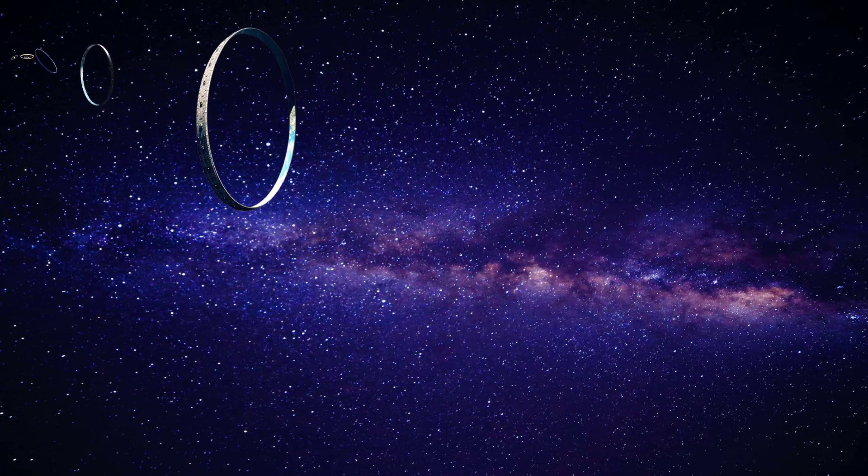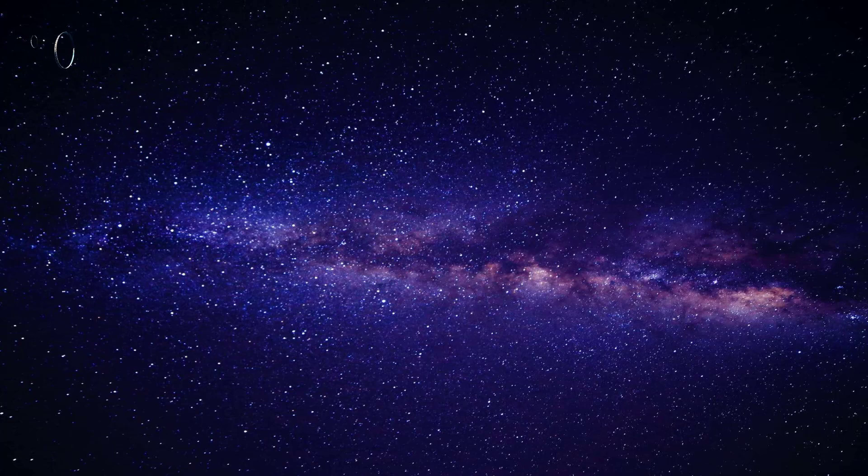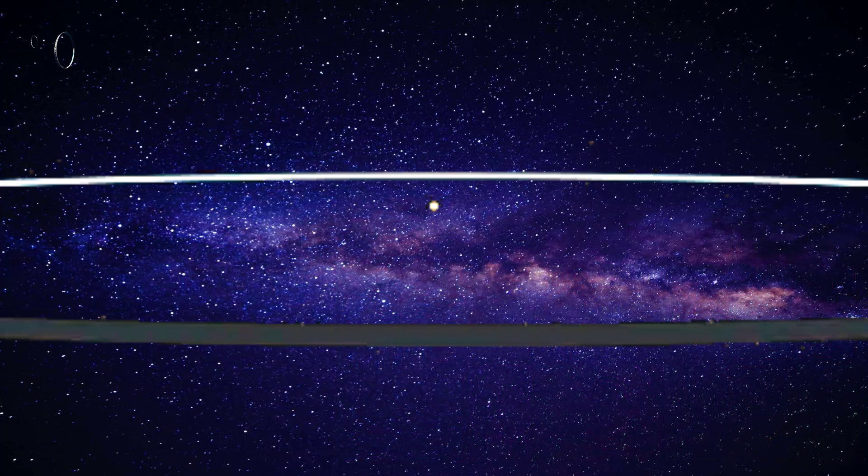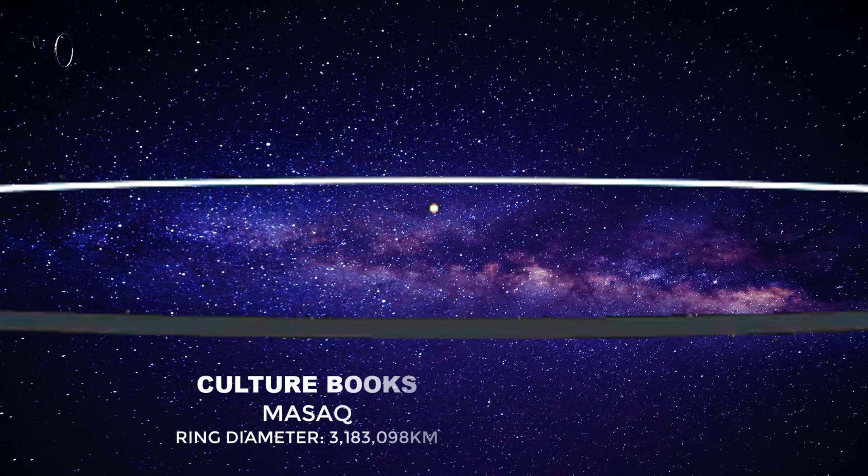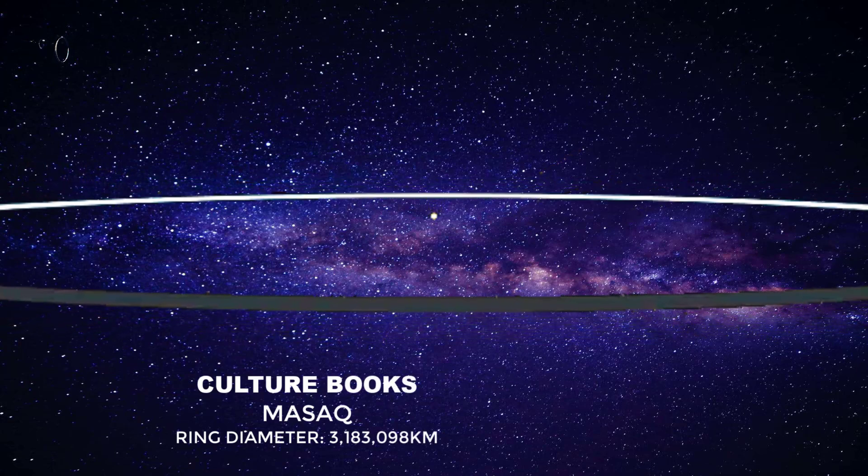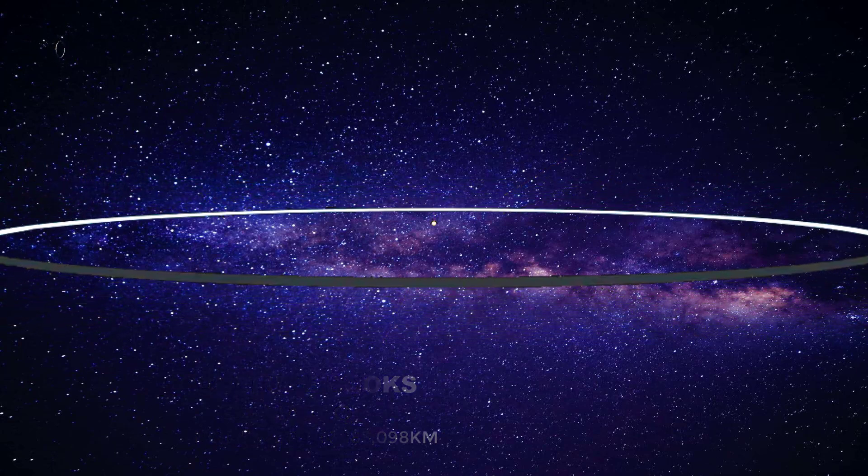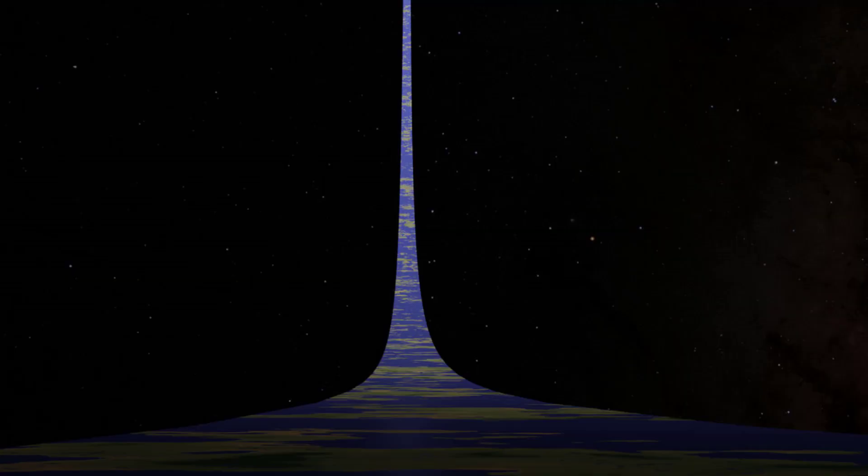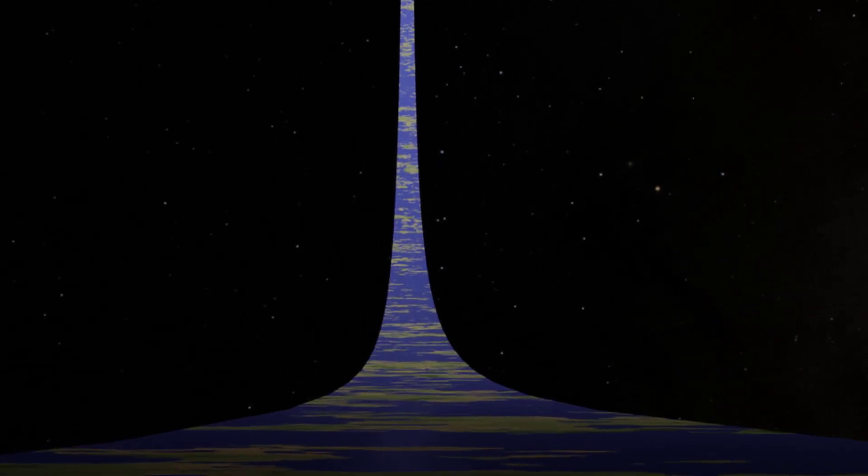But these halos were but specks of dust in comparison to the ringworld seen in Ian M. Banks's culture series, one of which was called Masaq, which is an orbital ringworld of staggering proportions, about 3,183,000 kilometers in diameter, more than 106 times that of the Omega Halo. This megastructure is built as part of a utopian engineering marvel of the culture.